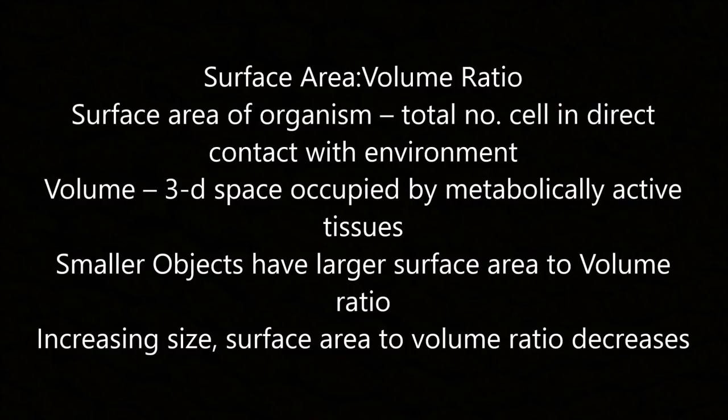Surface Area to Volume Ratio: the surface area of an organism is the total number of cells in direct contact with the environment, whereas volume is the 3D space occupied by metabolically active tissues. Smaller objects have a larger surface area to volume ratio, and as size increases, the surface area to volume ratio decreases.